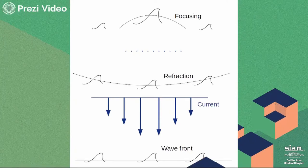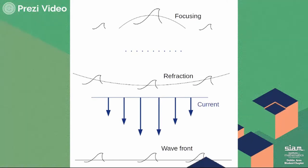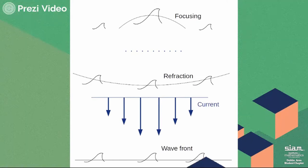If the current is stronger in the middle, then the sides of the wavefront will go faster, which induces refraction in the wavefront. Eventually, this can focus the waves into the middle line.